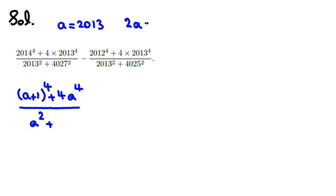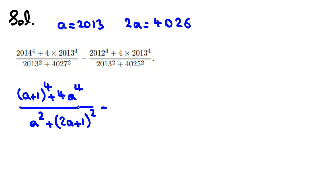2A equals 4026, so 4027 = 2A + 1, and we square it: (2A + 1)², minus 2012, which you can write as (A − 1)².